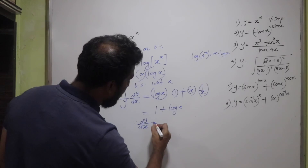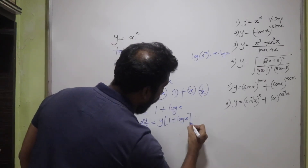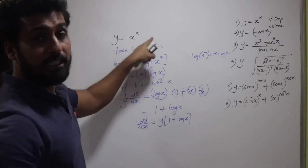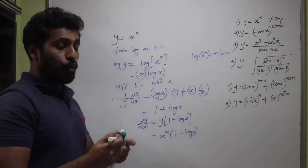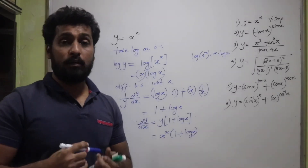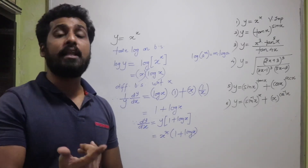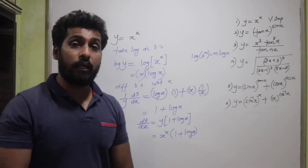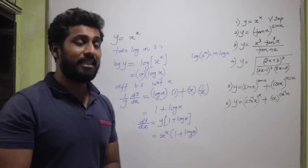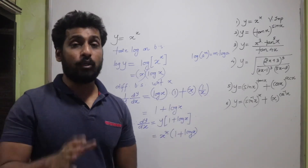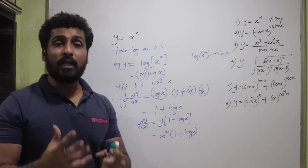Therefore dy/dx = y·(1 + log x) = xˣ·(1 + log x). Students, remember this as a formula: the derivative of xˣ is xˣ·(1 + log x). Whenever this question comes, immediately write the answer. Note down the solution in your notebooks.